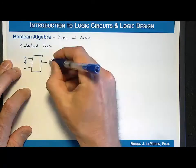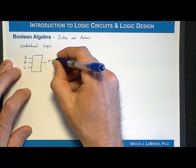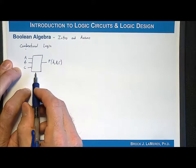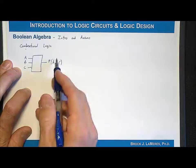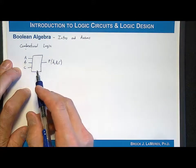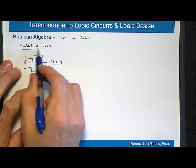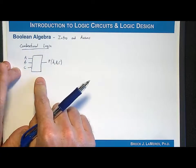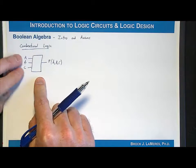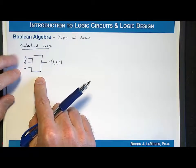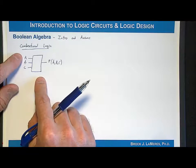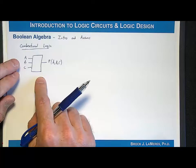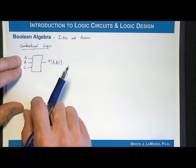A combinational logic circuit is a circuit in which the output depends on the instantaneous values of the input. For example, if we had A, B, and F, F is going to be a function of A, B, and C, meaning that any time there's a change on one of the input variables, the output will be updated accordingly.